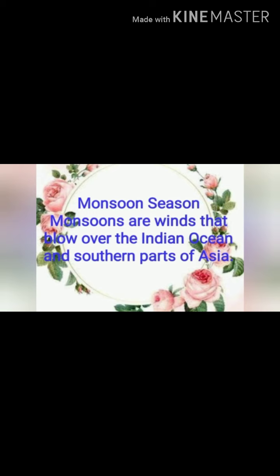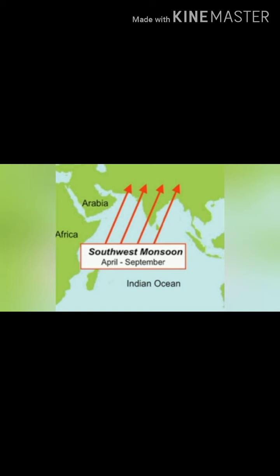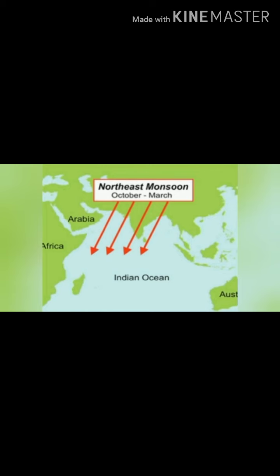The second one is the monsoon season. Monsoons are winds that blow over the Indian Ocean and southern parts of Asia. India has two monsoon seasons: the south-west monsoon season from June to September, and the north-west monsoon season from October to November.